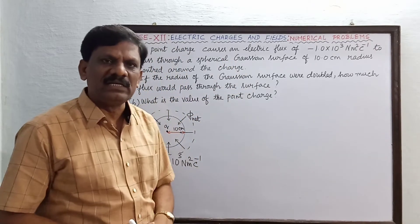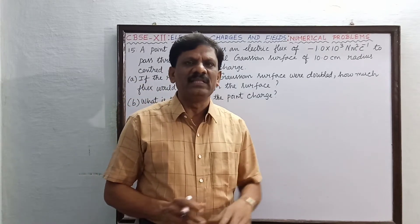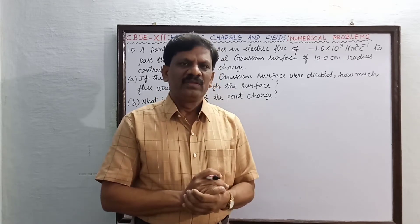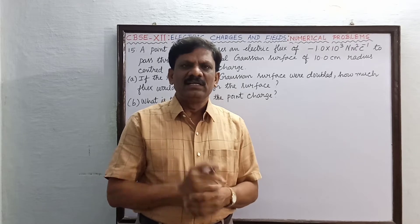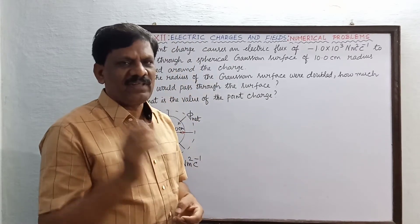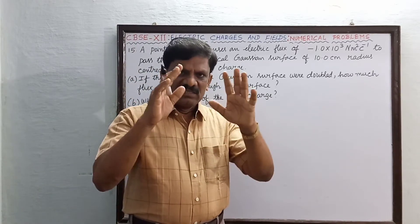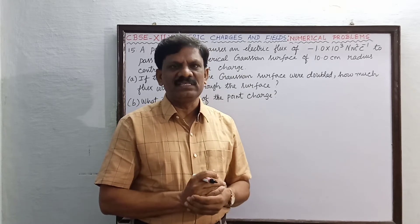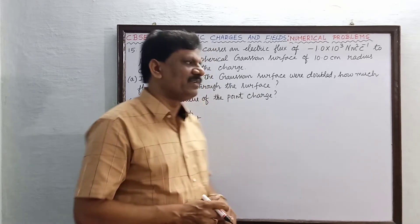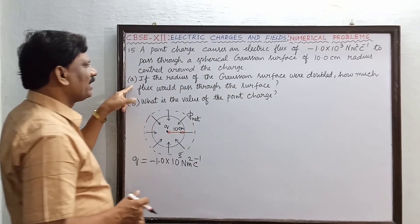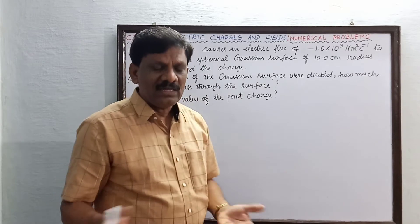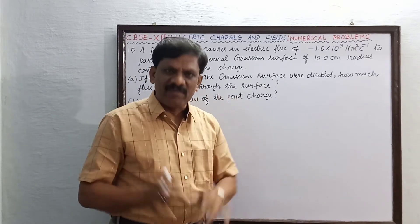From Gauss's law, there is a direct relationship between the net electric flux phi and the net charge Q. This relationship does not contain the term radius or area of the surface. Therefore, the net flux is independent of the size and shape of the Gaussian surface. It depends only on the quantity of charge located inside the Gaussian surface.